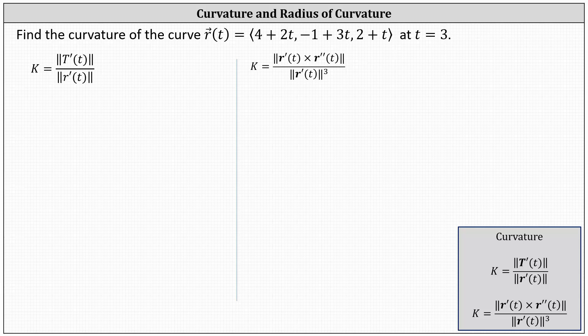Find the curvature of the curve given by the vector-valued function r of t at t equals 3. We can determine the curvature using either of the two formulas below. In this lesson, we'll take a look at both formulas, but before we do, let's start with a quick review.